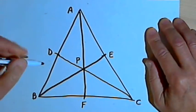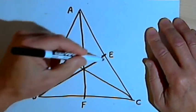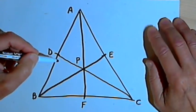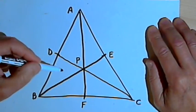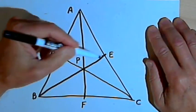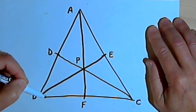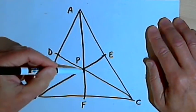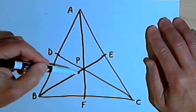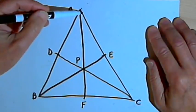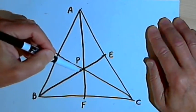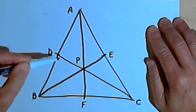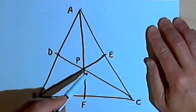The other interesting thing about the centroid is it divides each of those medians in exactly the same way. It divides it so that one segment is half as long as the other segment. In other words, segment FP is half as long as segment PA, and segment EP is half as long as segment PB. Segment DP would be half as long as segment PC.